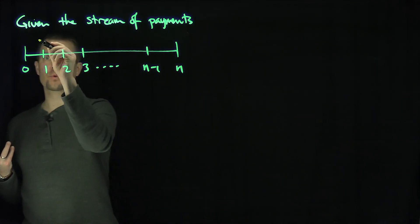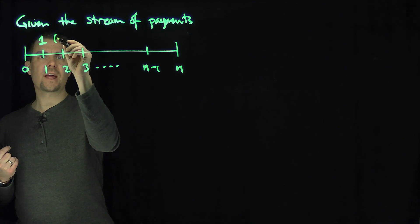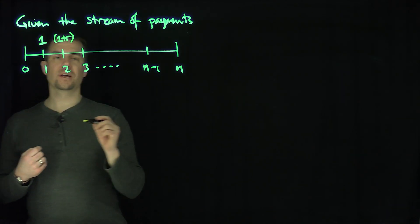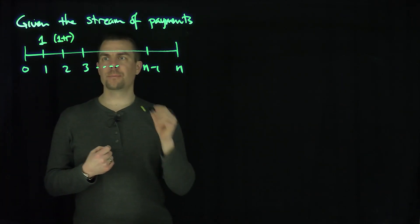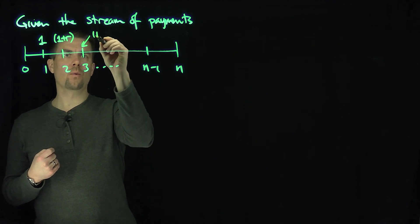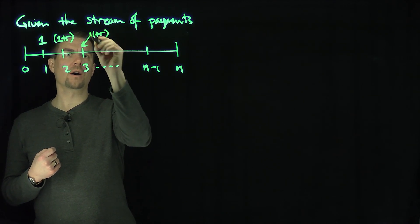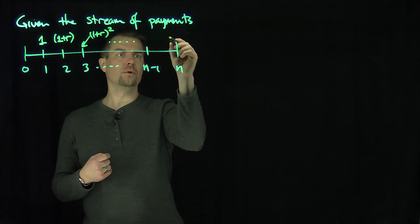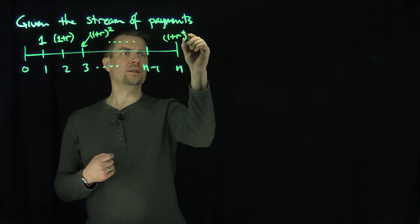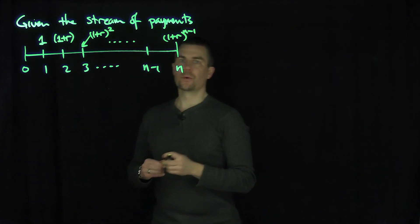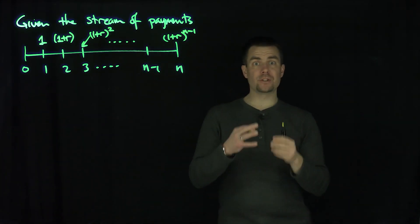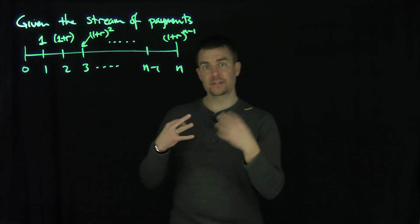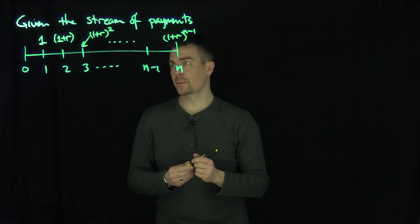Now what will happen is you're going to start with $1, then you're going to get (1+r) at time 2. At time 3, you're going to get (1+r) squared, all the way down to (1+r) to the n minus 1. So you're going to have a geometrically increasing progression that is ramping up as time moves forward.